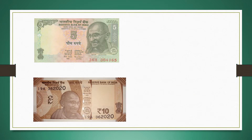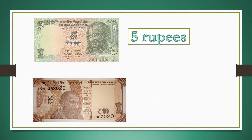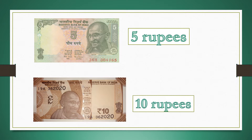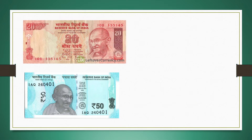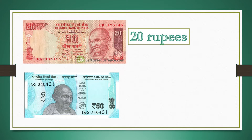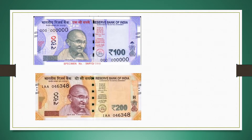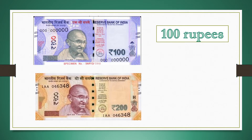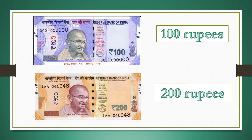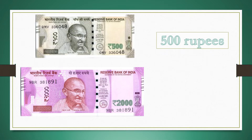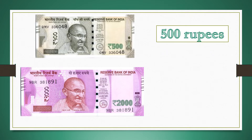Here are some currency notes. Observe them carefully and find their values. The first one is the 5 rupees note, then 10 rupees, 20 rupees, 50 rupees, 100 rupees, 200 rupees, 500 rupees, and 2,000 rupees.